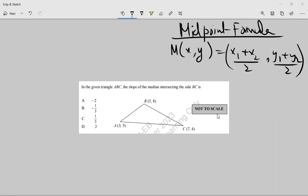In the given triangle ABC, the slope of the median intersecting the side BC. The median comes from the midpoint. The midpoint means median.